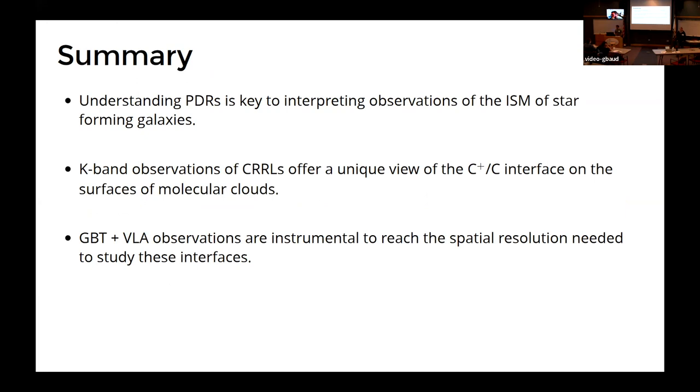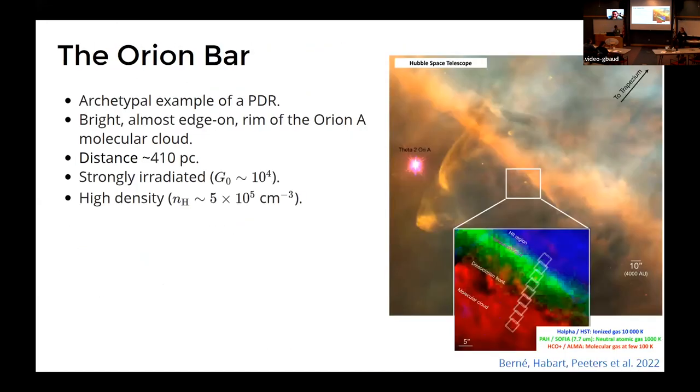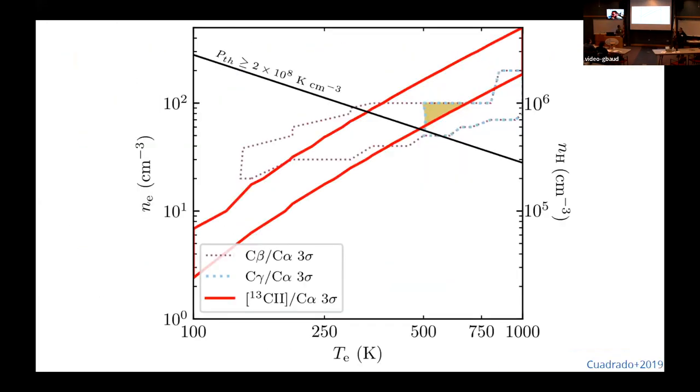The parameterization of the volume and temperature really depended on a lot of very faint lines, 13 carbon plus and you know C gamma and C beta. Are those single ones that are detectable and really do these constraints?